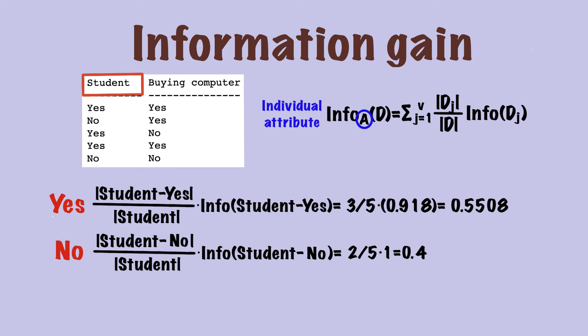Although the calculation is annoying, we now have everything we need to calculate the entropy of attribute student. In fact, we just have to sum up the number for each class. So the entropy for student is 0.5508 plus 0.4, which is 0.9508.